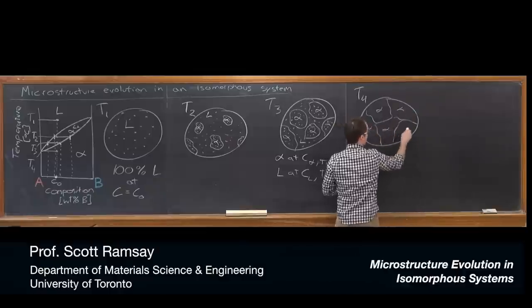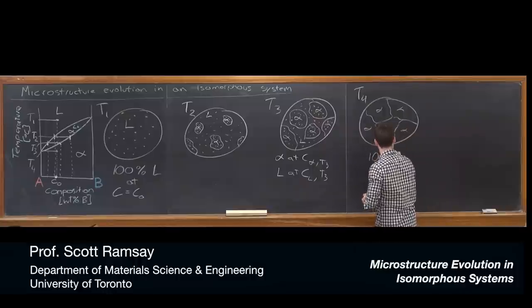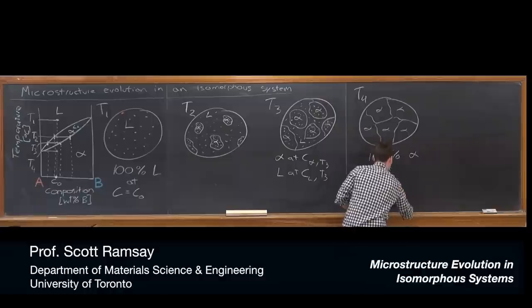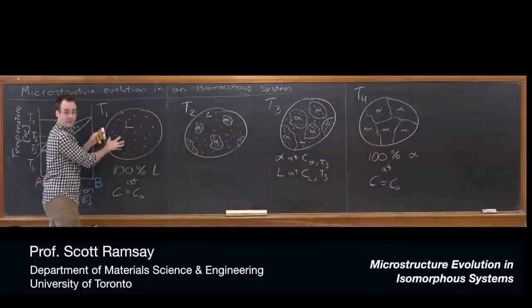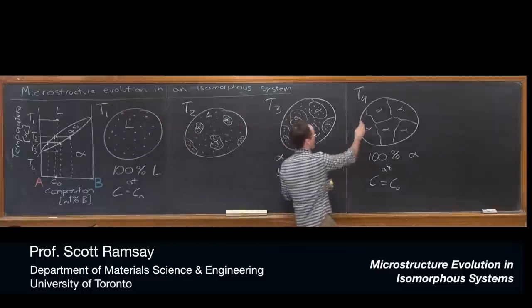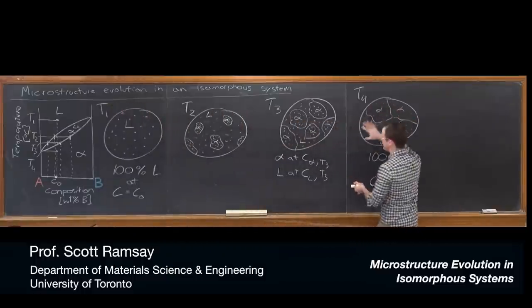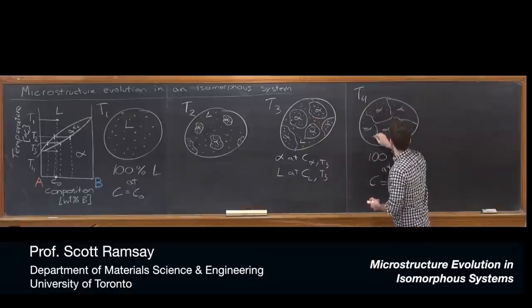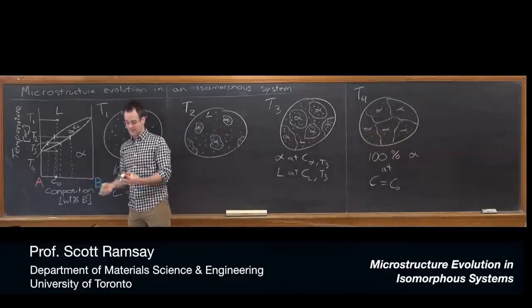where it's entirely solid alpha with a composition of C0, which again is going to actually be the same blending of red and blue, and it's distributed now homogeneously across the entire solid. A little bit more red than blue, because our overall composition was towards the A side of the phase diagram.